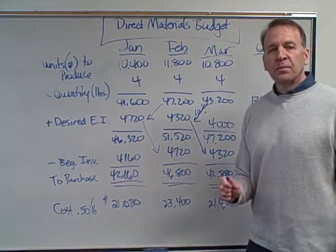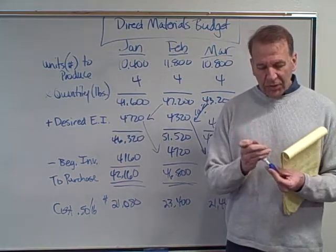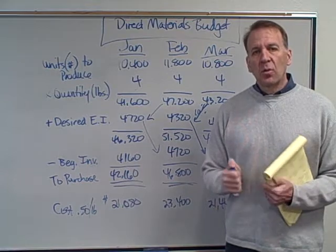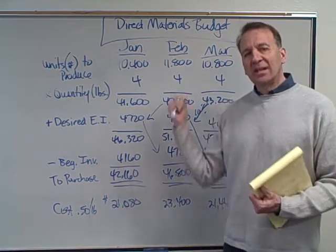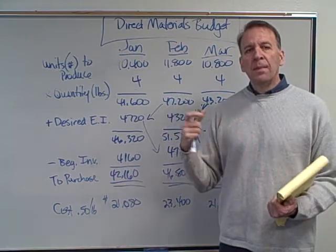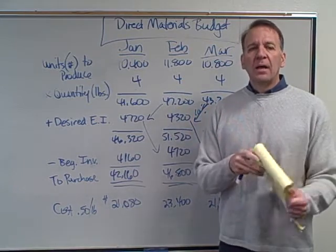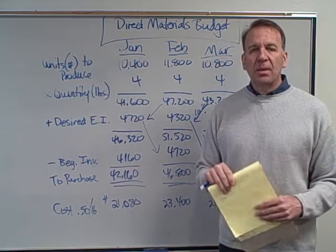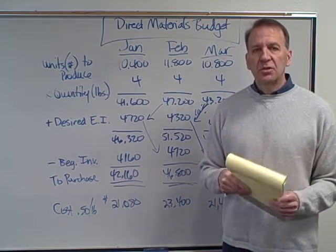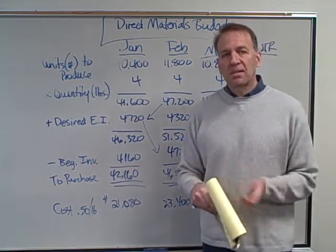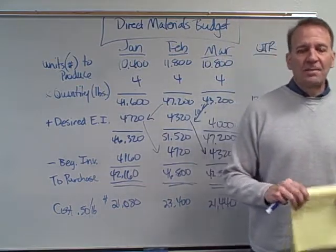I hope that helps. Good luck with these budgets. To recap the sequence: sales budget, then production budget, then the direct materials budget. The other budgets — direct labor, overhead, and operating budgets — are usually less difficult; you can often work those out from your textbook, but I'll make videos on those as well. Thank you.